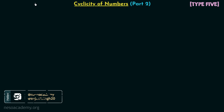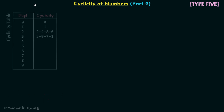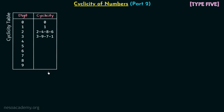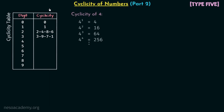This is our cyclicity table and we have already obtained the cyclicities for 0, 1, 2, and 3. Now we will move on to find out the cyclicity of digit 4.